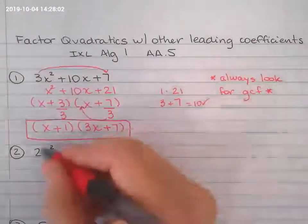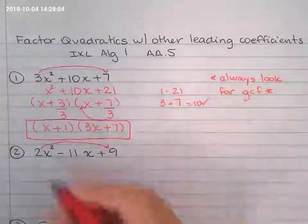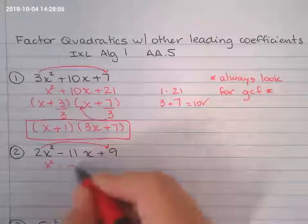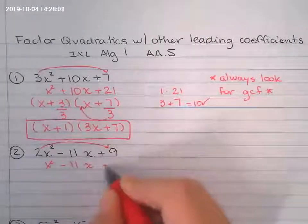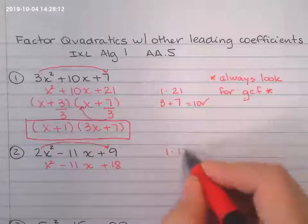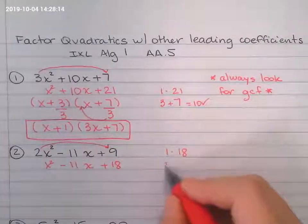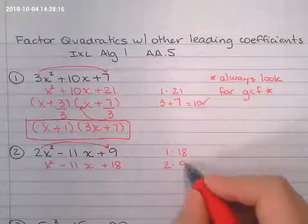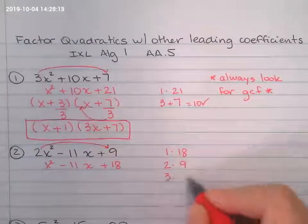So I'm going to get the 2, multiply by the last one. Get the factors out. I like to start with 1, 1 times 18, 2 and 9, 3 and 6. Oh, but wait a minute.